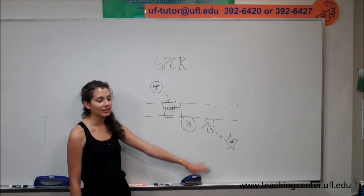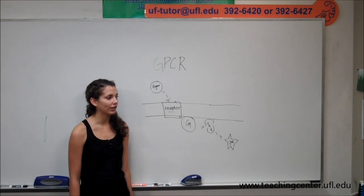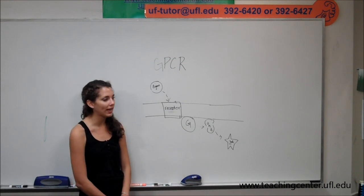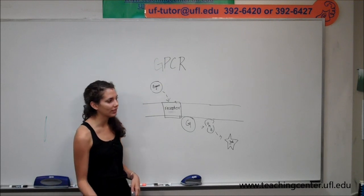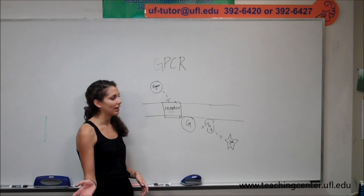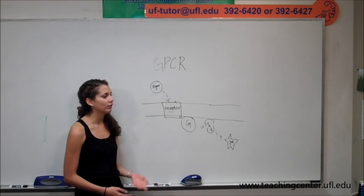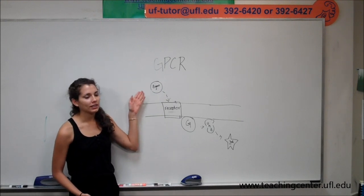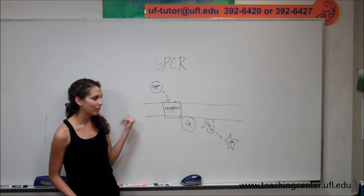The second messenger then activates or deactivates other intracellular enzymes. For example, cyclic AMP activates protein kinase A by phosphorylation. This leads to an amplified cellular response to the original extracellular signaling ligand. So with cyclic AMP, epinephrine.